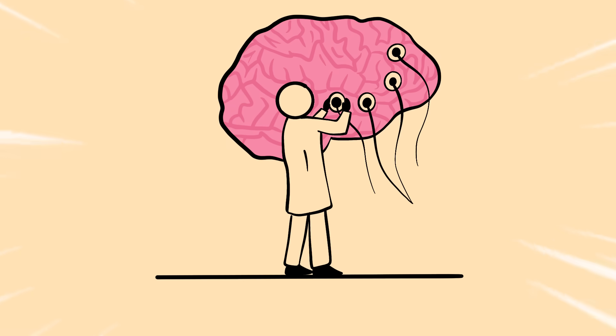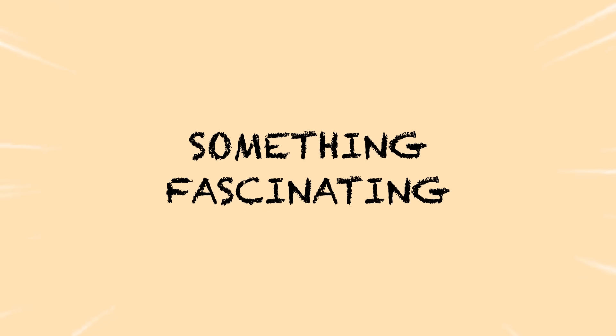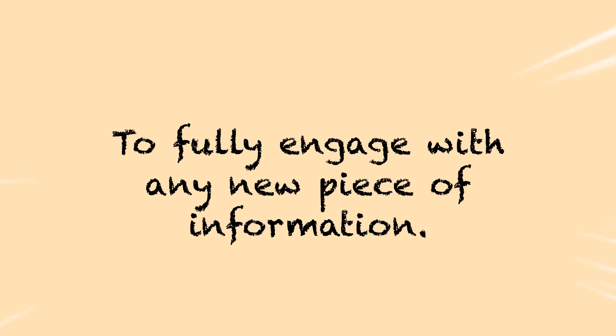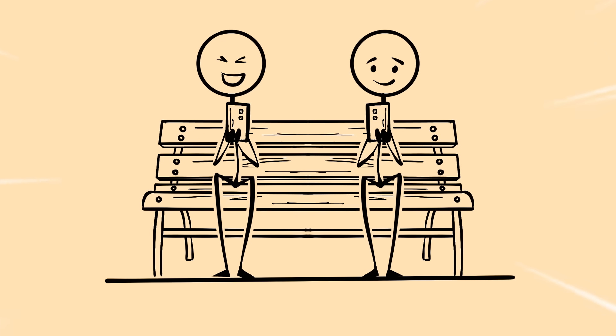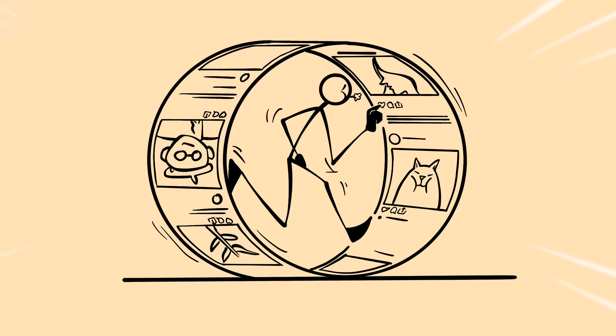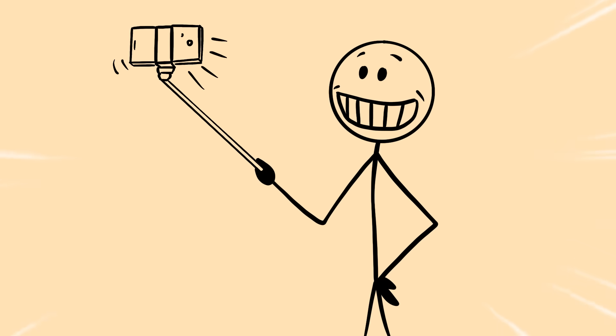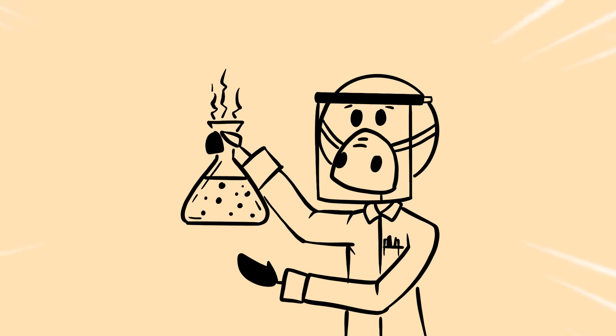MIT neuroscientists recently discovered something fascinating. It takes your brain about 23 seconds to fully engage with any new piece of information. But the average person switches attention on their phone every 6 to 8 seconds. This means your brain never gets to complete its processing cycle. It's like trying to take a photo while constantly shaking the camera.